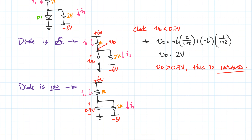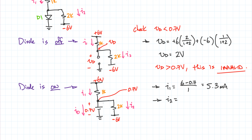Now we check ID — the current through the diode, which we model as a voltage source of 0.7 volts. The voltage at that node is 0.7 volts above ground. So I1 equals (6 minus 0.7) divided by 1k, which gives 5.3 milliamps. For I2, it's (0.7 minus (minus 6)) divided by 2k, which is 6.7 divided by 2, giving 3.35 milliamps.